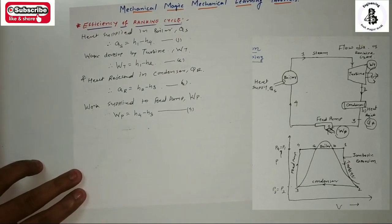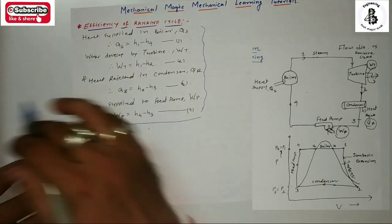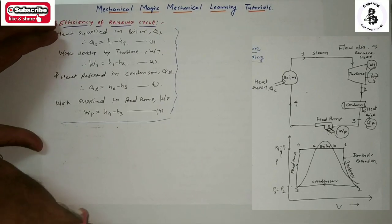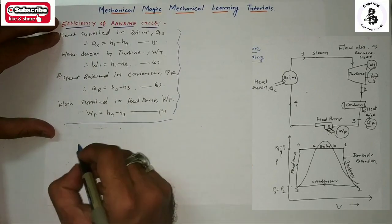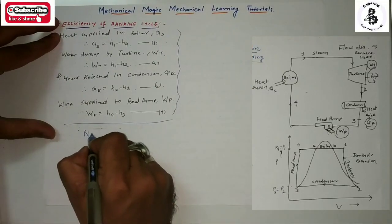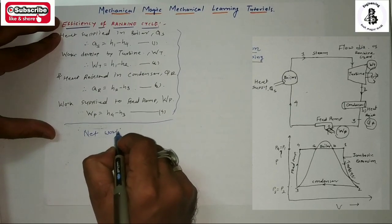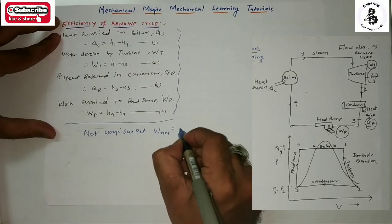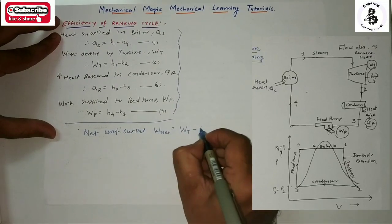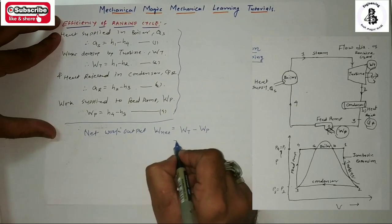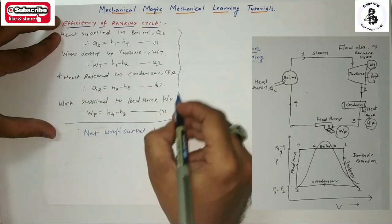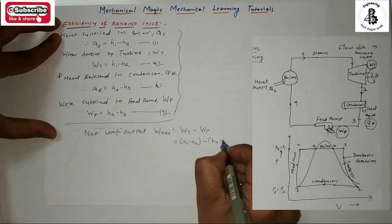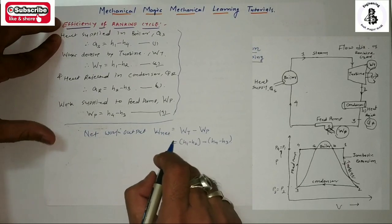From all the data — heat supplied, work done, heat rejected, and work supplied to the feed pump — the net work output is: W_net = W_turbine − WP, which using equations 2 and 4 gives W_net = (H1 − H2) − (H4 − H3).